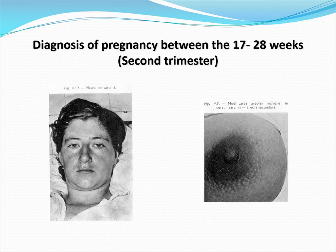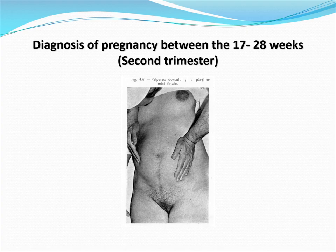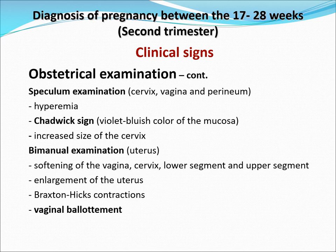Your perineum would continue to be accentuated with pigment. Your breasts would continue to change. Your abdomen would be a globular soft contractile painless mass with still irregular painless uterine contractions — your Braxton-Hicks. The height of the uterine fundus becomes measurable: 16 centimeters at 20 weeks, 20 centimeters at 24 weeks. Ballottement sign would be more evident, and auscultation of heart sounds would be done every checkup. Central to clinical checkups would be your Leopold's maneuvers, which we will learn about.